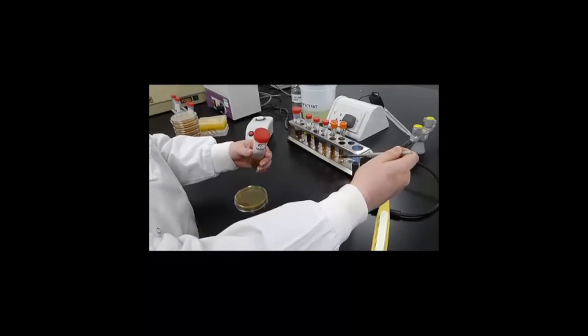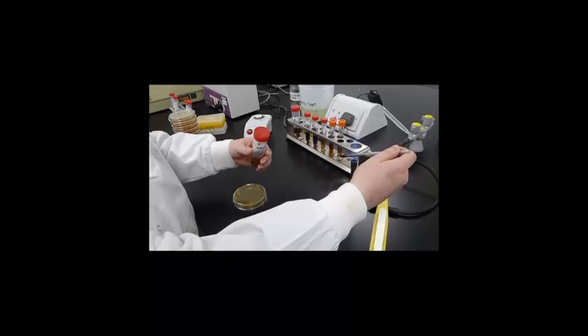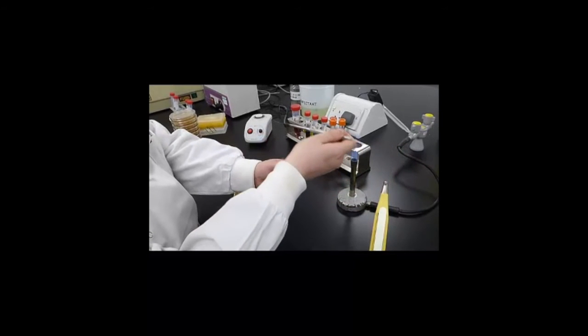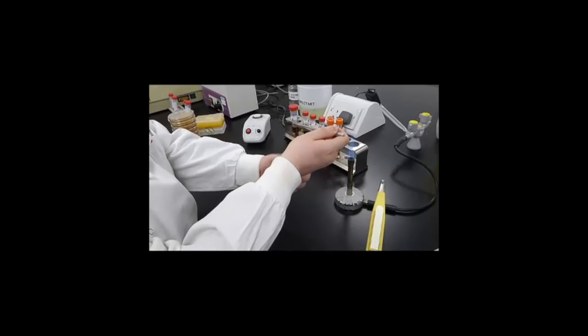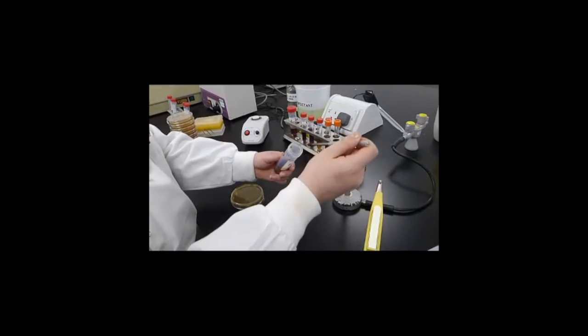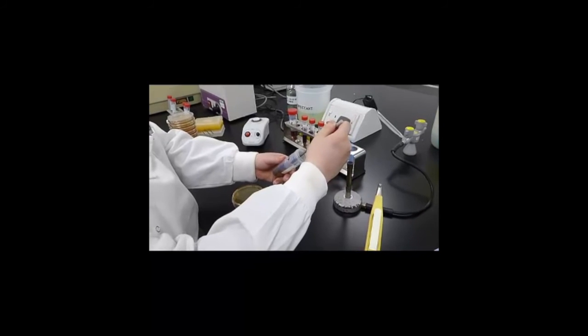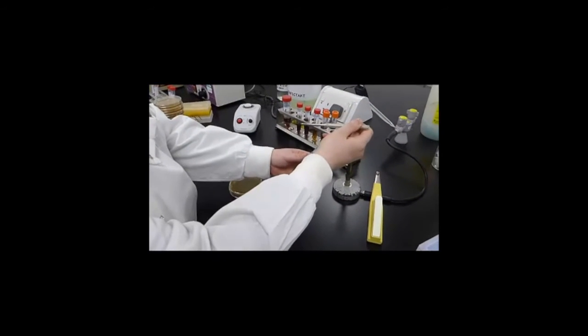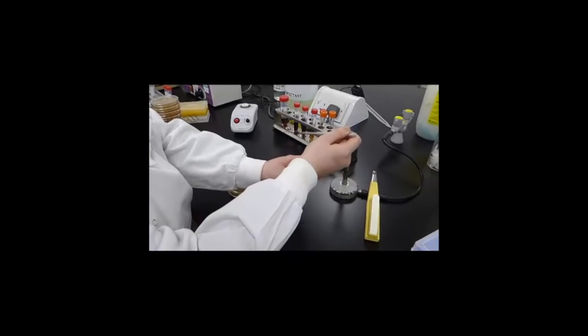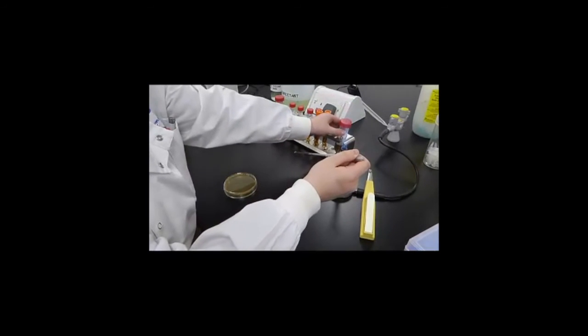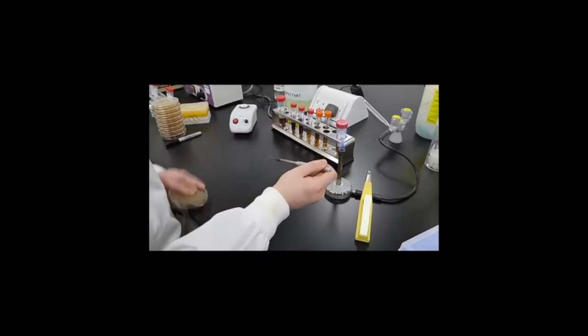The aseptic techniques around the Bunsen burner give us control over minimizing contamination. We're using a loop here to take a sample out. That's a very thin wire that we can heat up to sterilize and then cool down before we take our sample. Holding it initially and then into the sample will take a small amount. It only needs to be a drop, and we'll work around the flame to keep that tube fairly sterile and not contaminated.